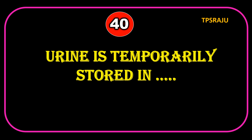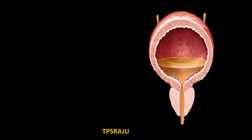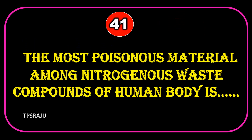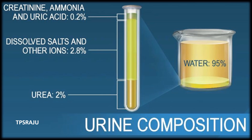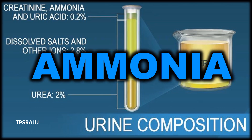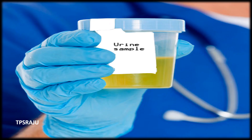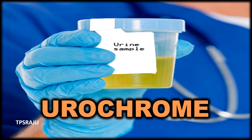Urine is temporarily stored in the urinary bladder. The most poisonous material among nitrogenous waste compounds of the human body is Ammonia. Urine has amber color due to Urochrome.